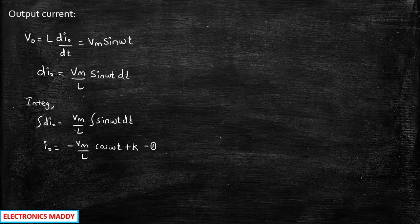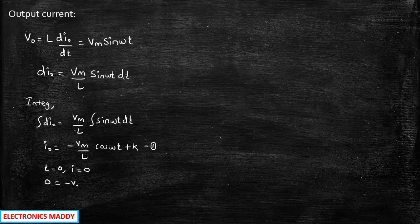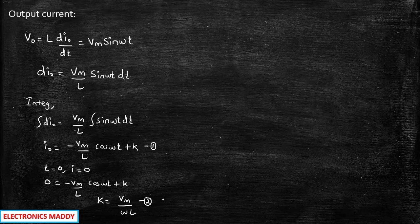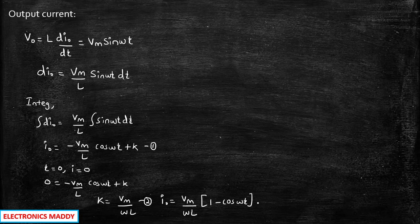In order to find the constant value, we assume t = 0 and i = 0 as our initial conditions. Substituting, 0 = −(Vm/ωL)·cos(0) + k. Since cos(0) = 1, we get k = Vm/ωL. So when we substitute equations 1 and 2, the expression for i_out equals (Vm/ωL)·(1 − cos(ωt)). This is expression number 3.